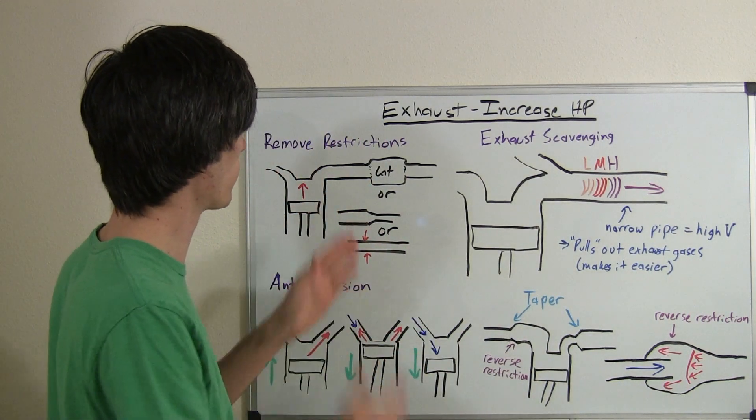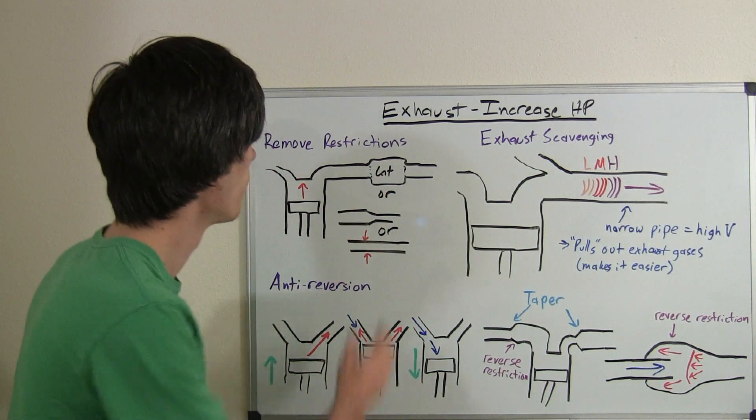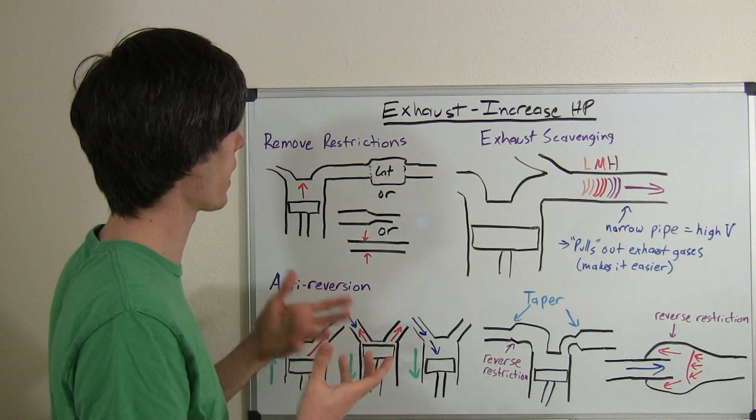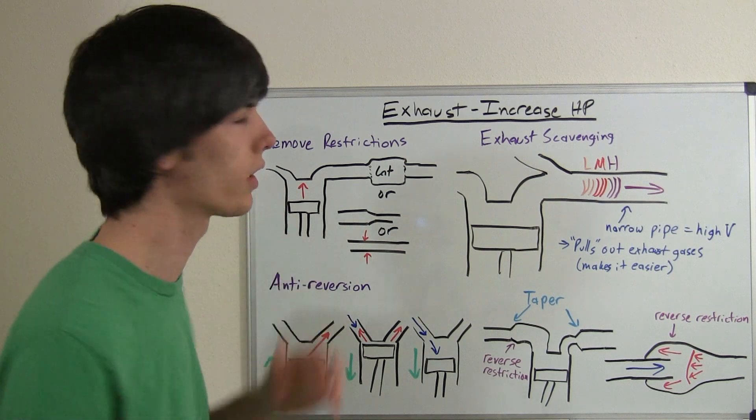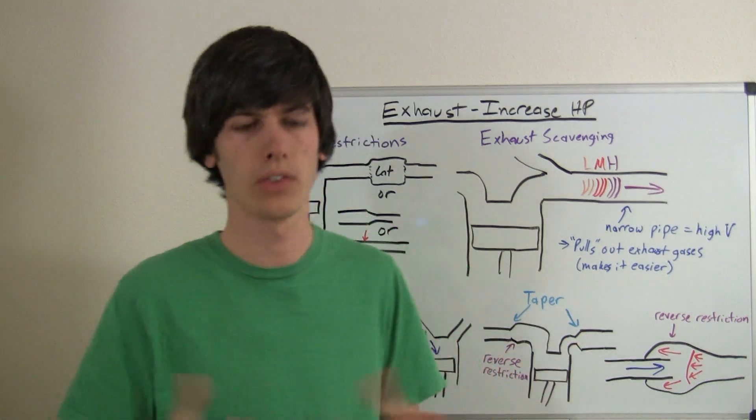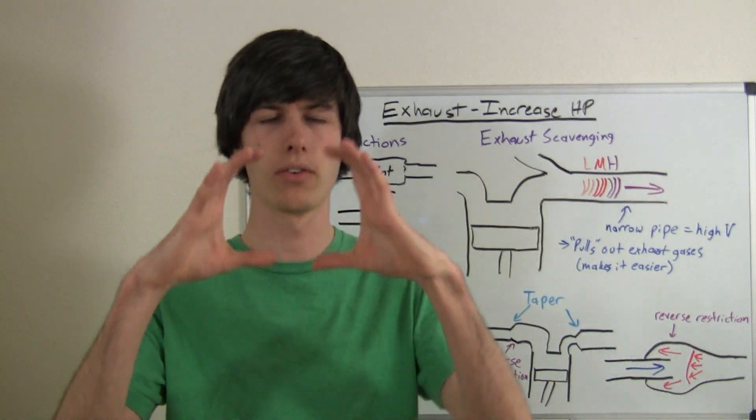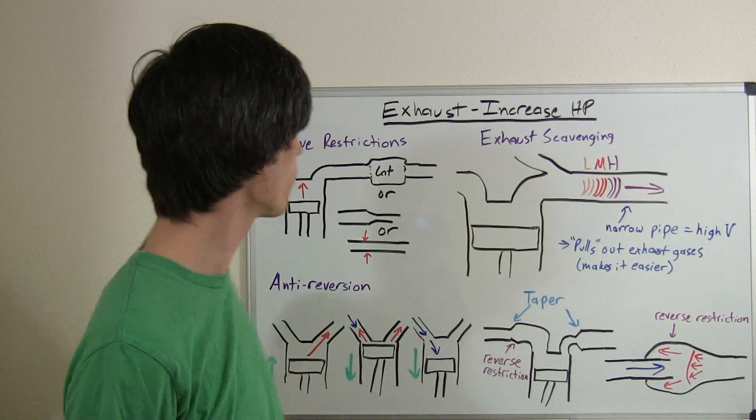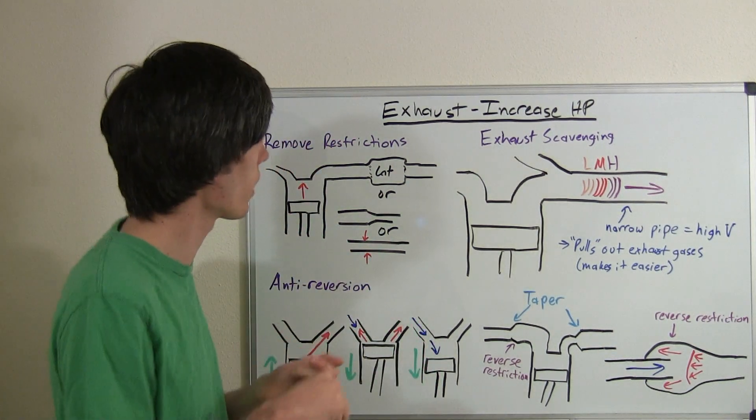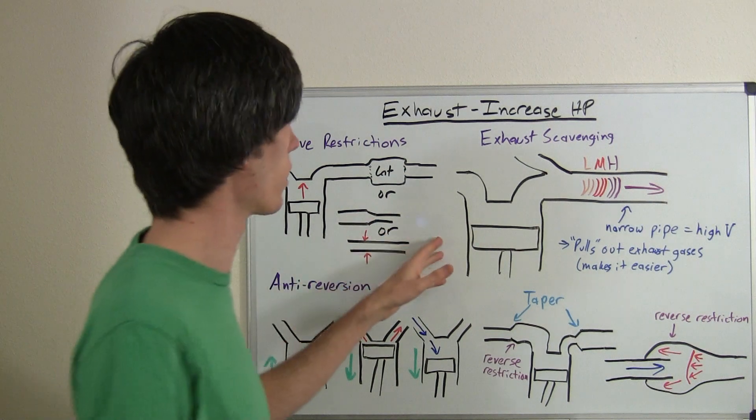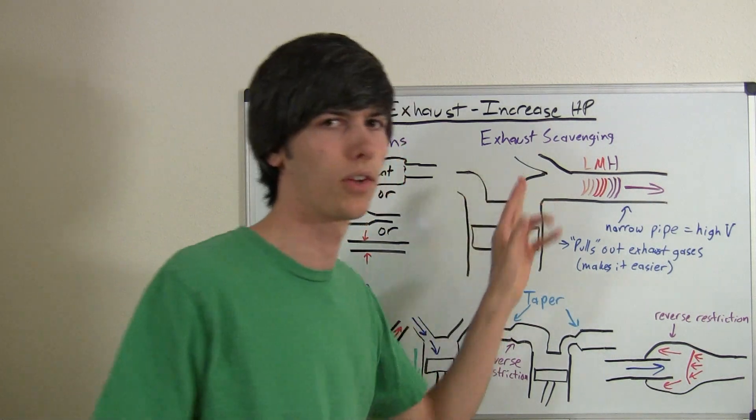That's one thing you can do is basically eliminate restrictions or simply have a larger exhaust. So you're thinking now, why have an exhaust at all or why not just put a massive six inch pipe the whole way from your exhaust? Well, there actually is some reasons that you wouldn't want to do that. And part of that is exhaust scavenging.